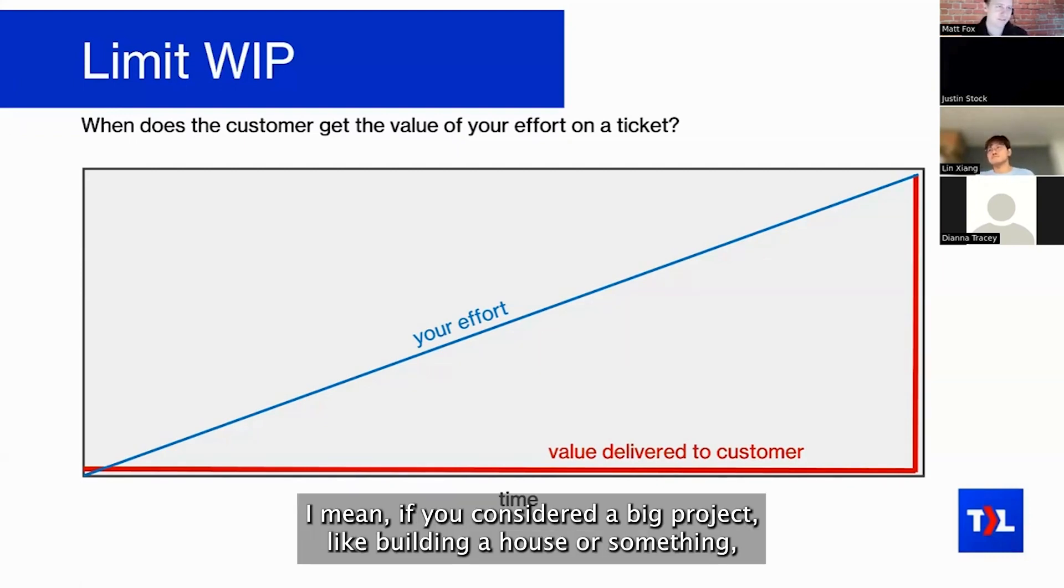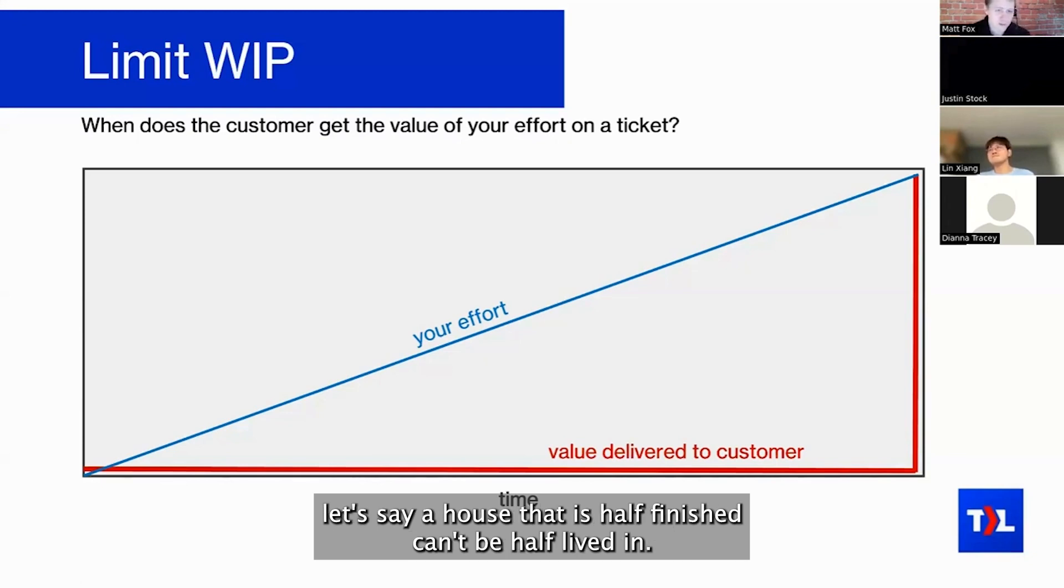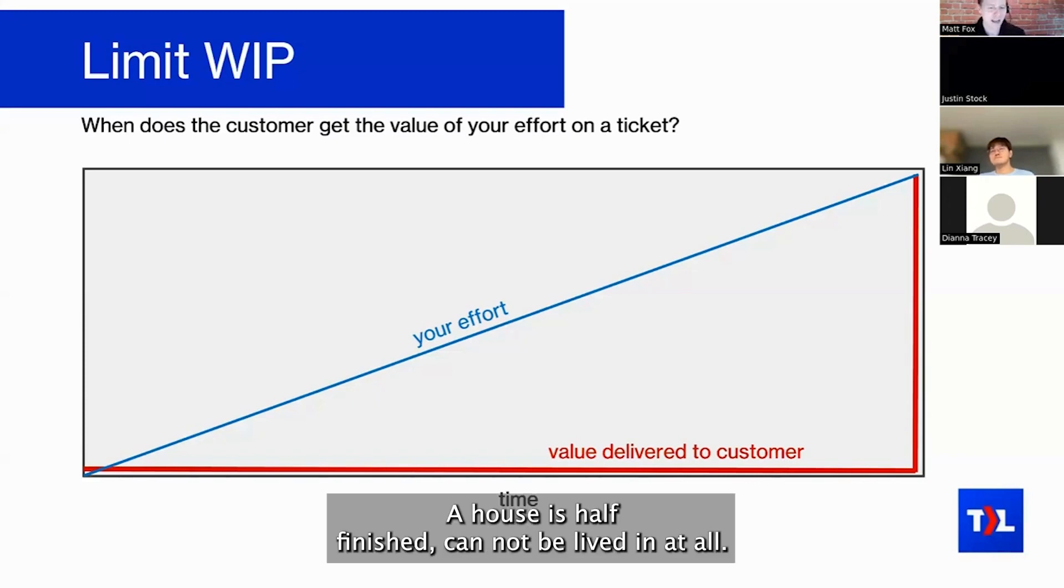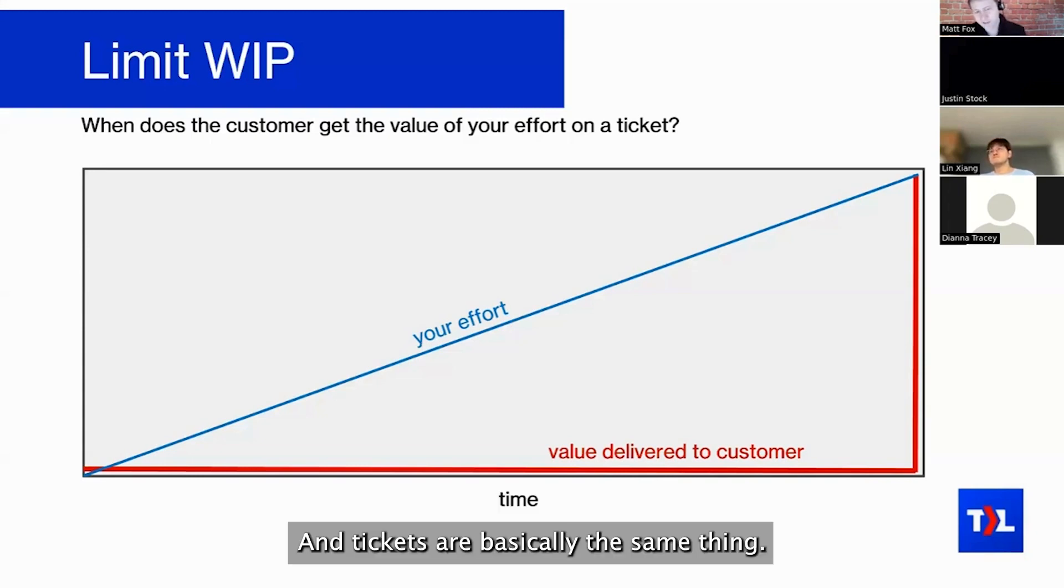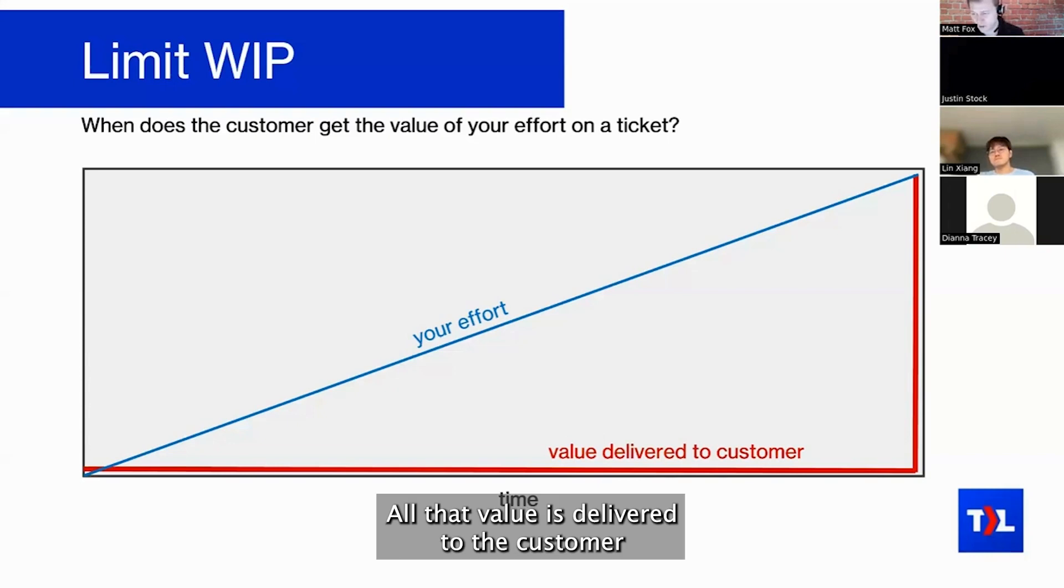If you consider a big project like building a house, a house that is half finished can't be half lived in. A house that's half finished cannot be lived in at all—it has to get basically totally complete before you can begin living in it. Tickets are basically the same thing: all that value is delivered to the customer at the end, and this is a key reason that we want to limit work in progress.